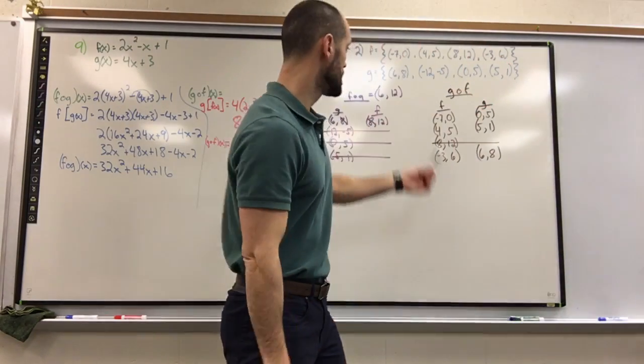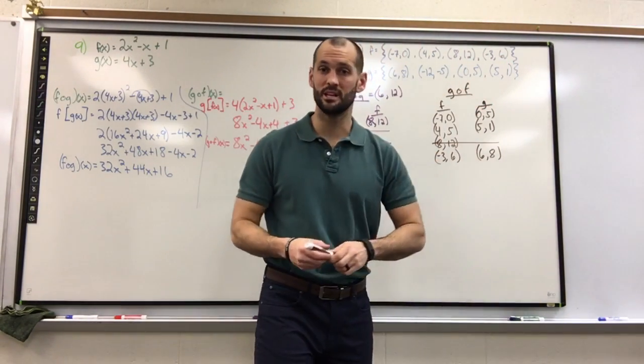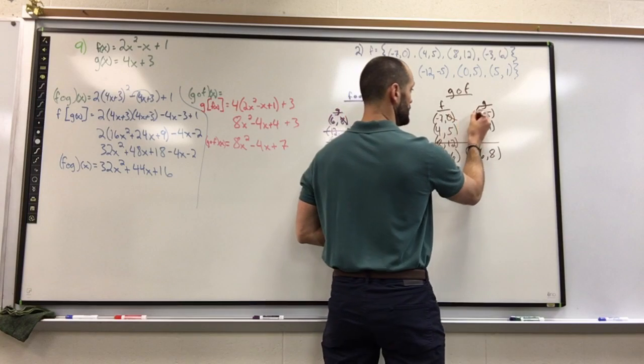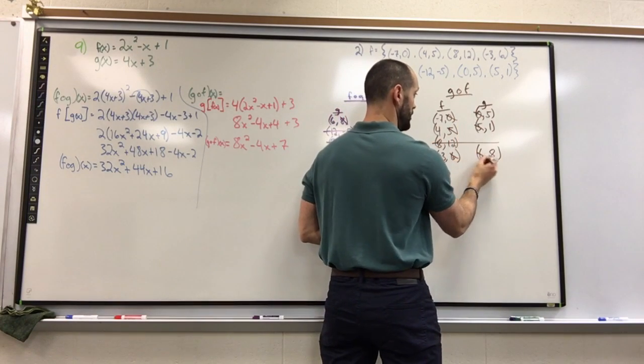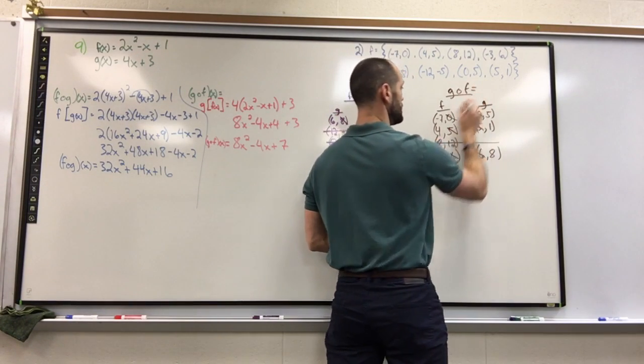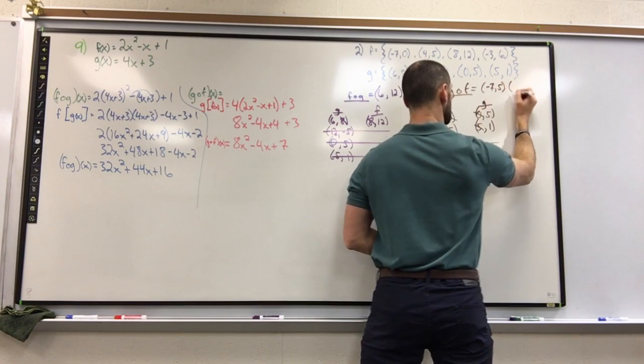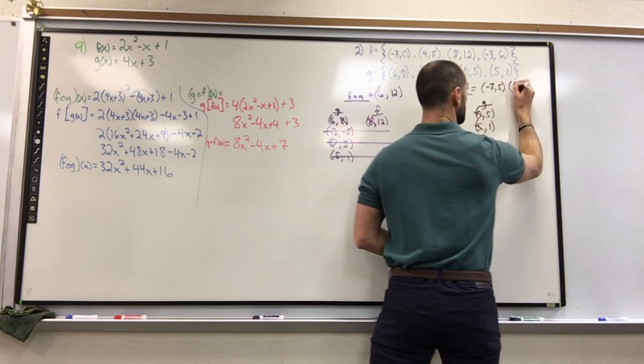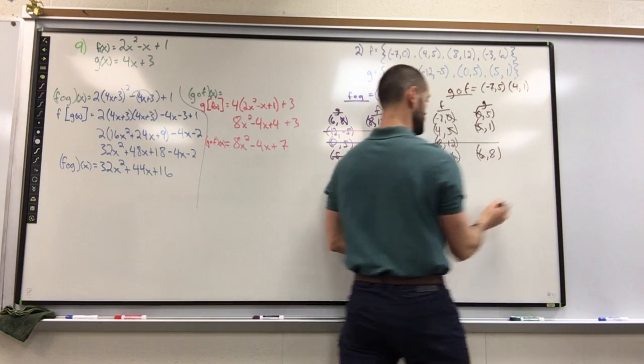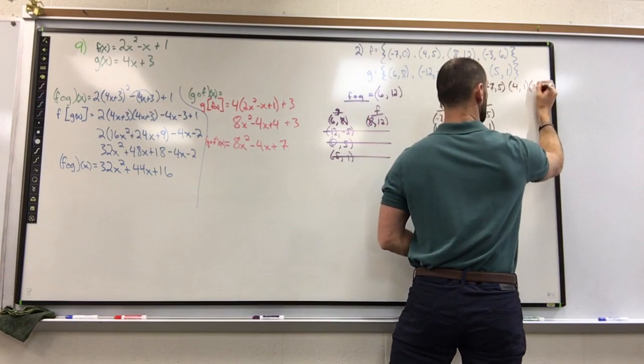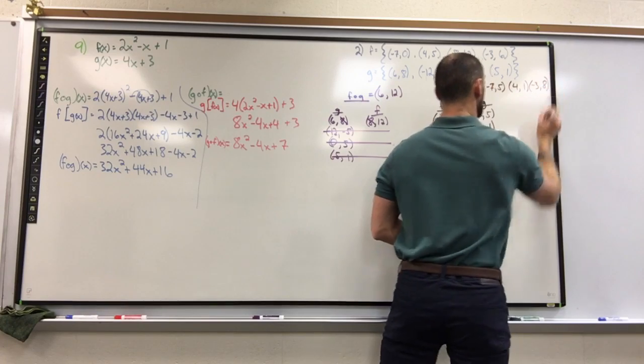Now notice we have three points that we're able to do the inside handoff. I ignore the inside handoff now and my new points appear: (-7, 5), (4, 1), and (-3, 8). Those are the only points that exist in g of f.